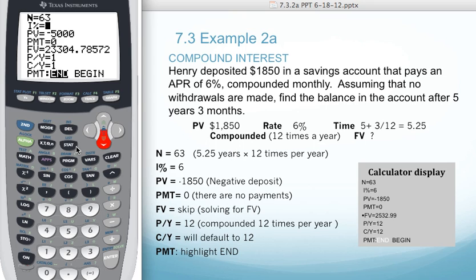We want our interest rate of 6%. The present value will be $1,850. Again, it's going to be negative because it came out of our pocket.